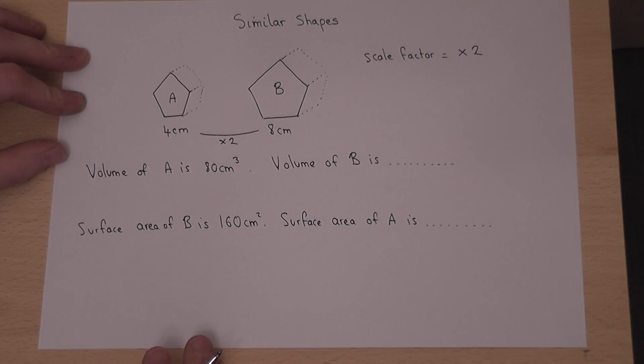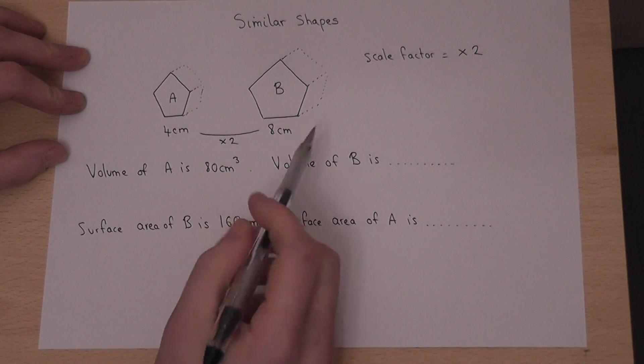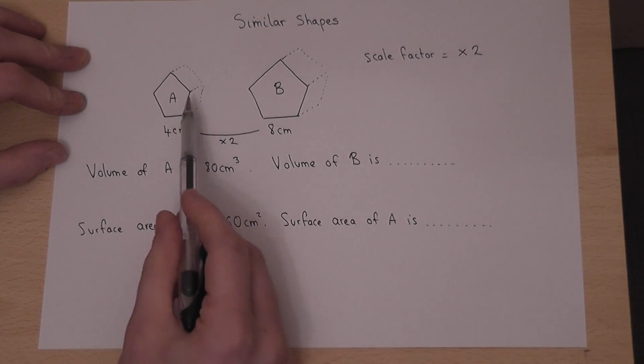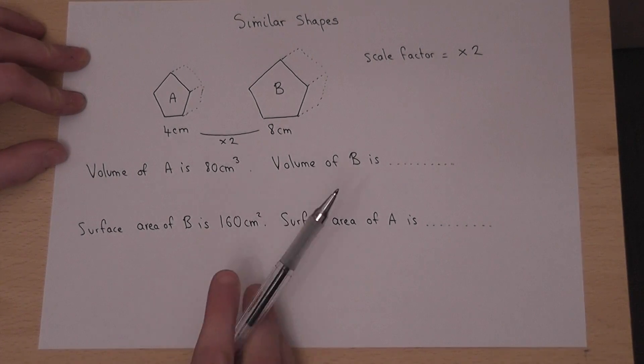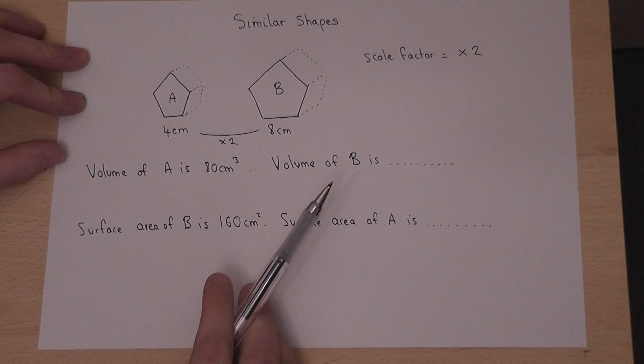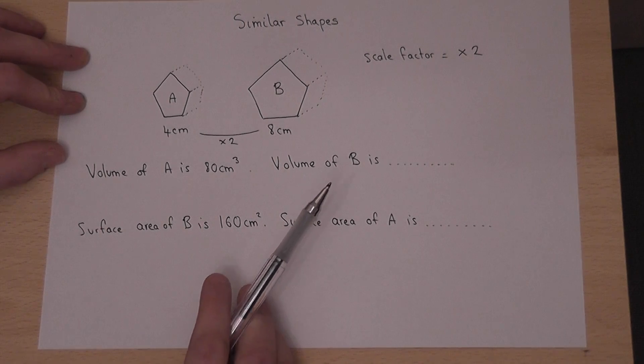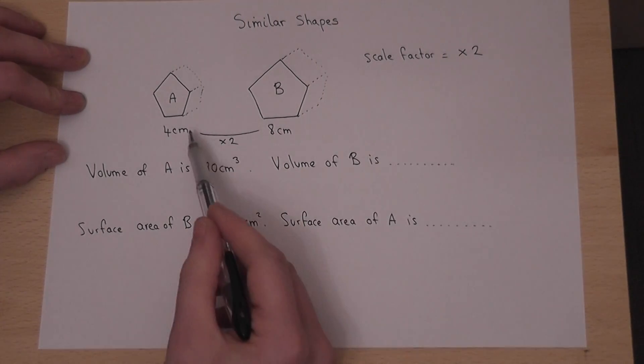In this question we're asked to find out the volume of shape B if the volume of shape A is 80 centimeters cubed. Now there's a few important facts to be aware about with similar shapes. Now this is the scale factor of the sides.